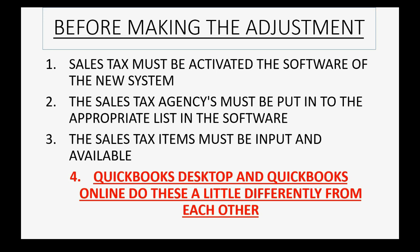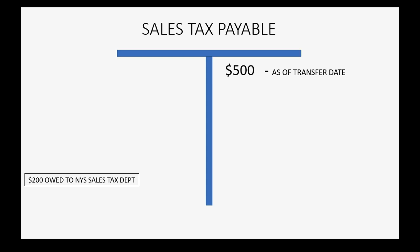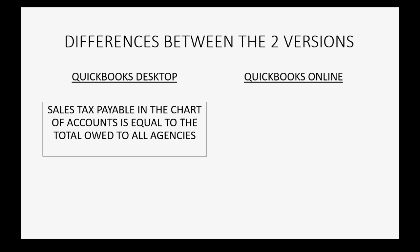QuickBooks Desktop and QuickBooks Online do things a little bit differently from each other regarding managing sales tax. For example, if you owed $500 in total sales tax on the day of the transfer, it could be that you owe $200 to one department of government and $300 to a different department of government or a different tax agency.